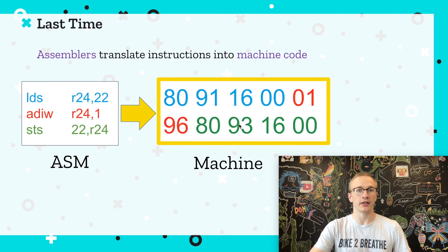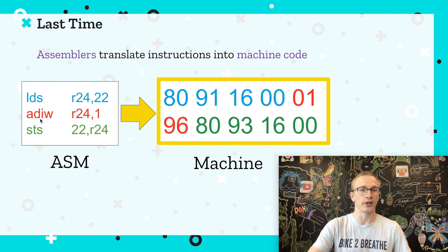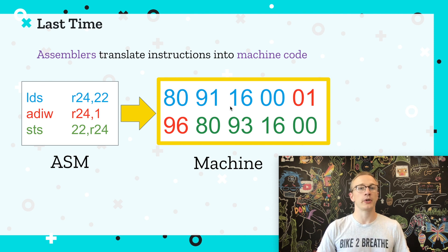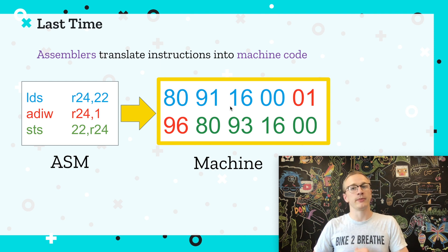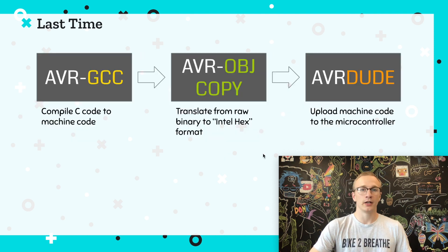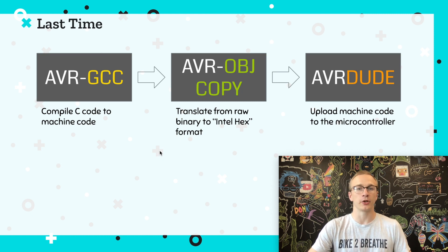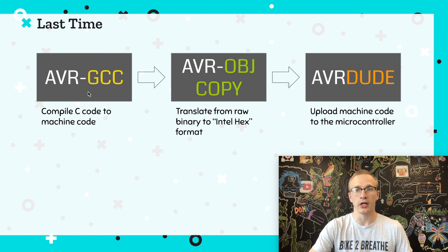The next step is the assembler, a program that takes assembly and directly translates it into machine code. So between a compiler and an assembler we can take our C code and convert it all the way into machine code. This is what our workflow looks like to compile and upload code to our microcontroller — we start with AVRGCC, which can compile and assemble code.